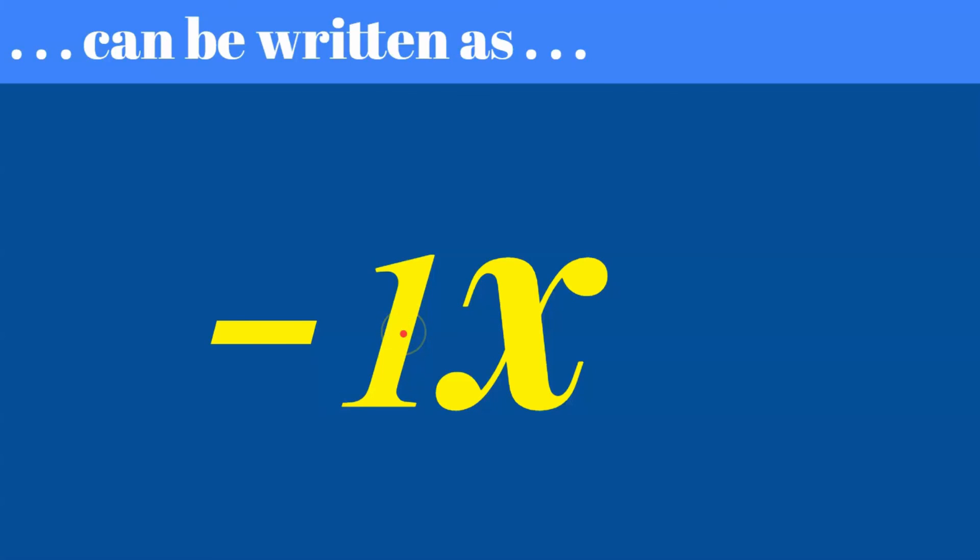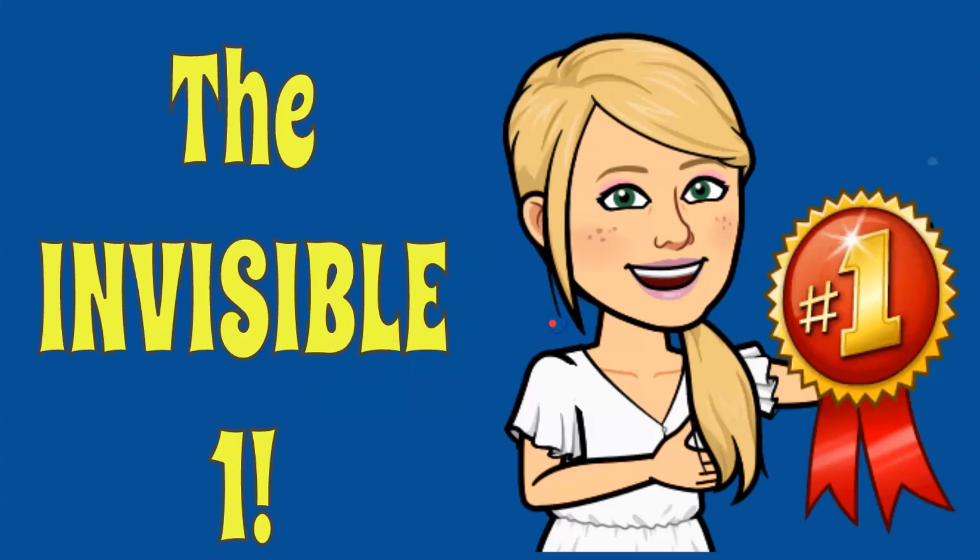So this is really negative one multiplied by the value of x. Negative one times x. And that's it. That's the invisible one. Thanks for joining me today. Don't forget to subscribe to my channel.